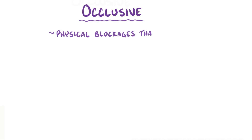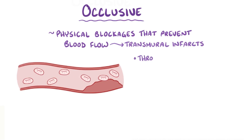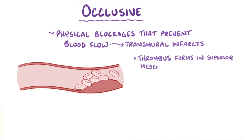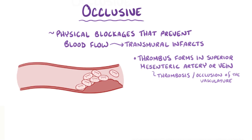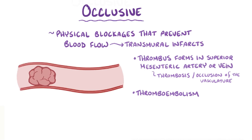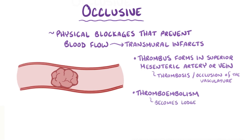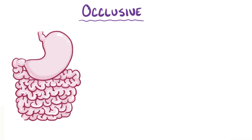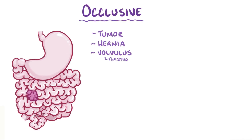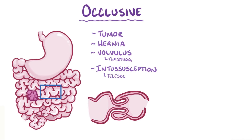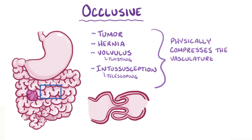Small bowel ischemia and infarction can happen due to occlusive and non-occlusive causes. Occlusive causes are physical blockages that prevent blood flow through the vasculature, and they usually cause transmural infarcts. This can happen when a thrombus, or a blood clot, forms in the superior mesenteric artery or vein and causes thrombosis, or occlusion of the vasculature. It can also happen when a thromboembolism, which is a piece of a blood clot that's broken off, travels through the blood and becomes lodged in the superior mesenteric artery. Occlusive causes also include when something like a tumor, hernias, volvulus, or a twisting of the bowel, or intussusception, which is telescoping of the bowel, physically compresses the vasculature and occludes blood flow.